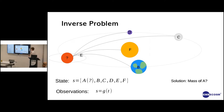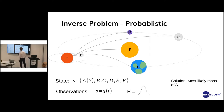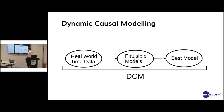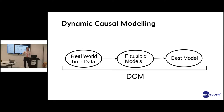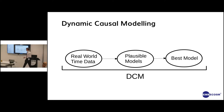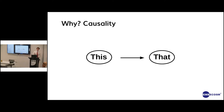So where does dynamic causal modeling come in? Broadly, dynamic causal modeling takes real-world time series data and a set of plausible — usually probabilistic — dynamical systems models, and it tries to infer the best one of these models from the set of plausible models along with the associated parameters. One advantage is causality: solving causality between explanatory variables is a genuinely difficult problem, and this is one way of getting at it.